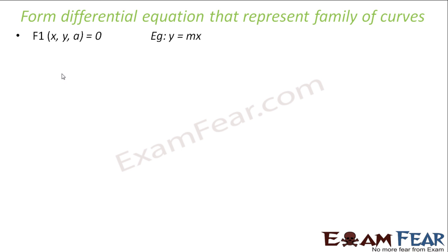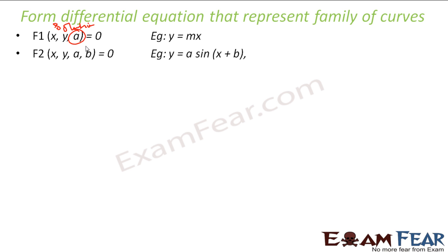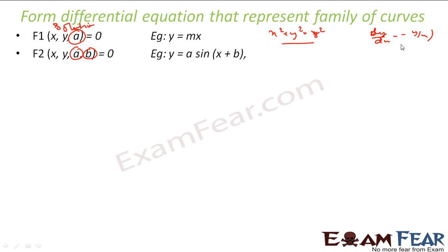So the general rule is: if I have a general solution which has one variable, I will differentiate one time. If I have two variables, I will differentiate two times. For example, in the last example x² + y² = r², I differentiated once and got dy/dx = −x/y.